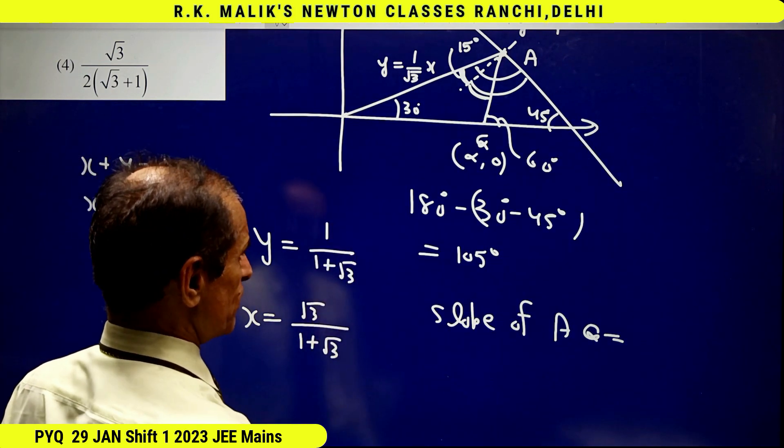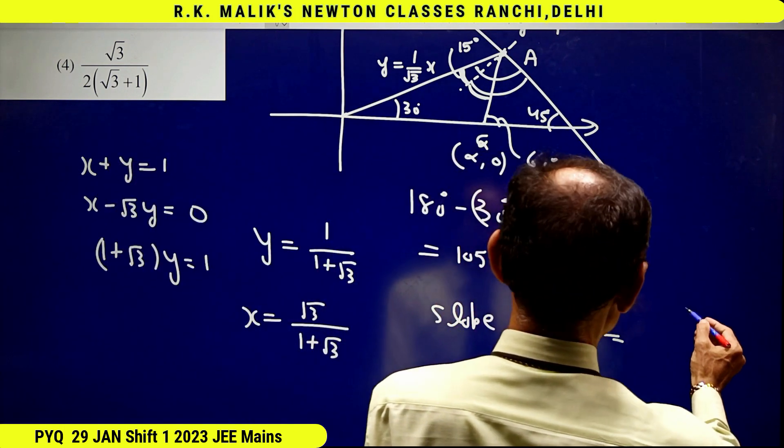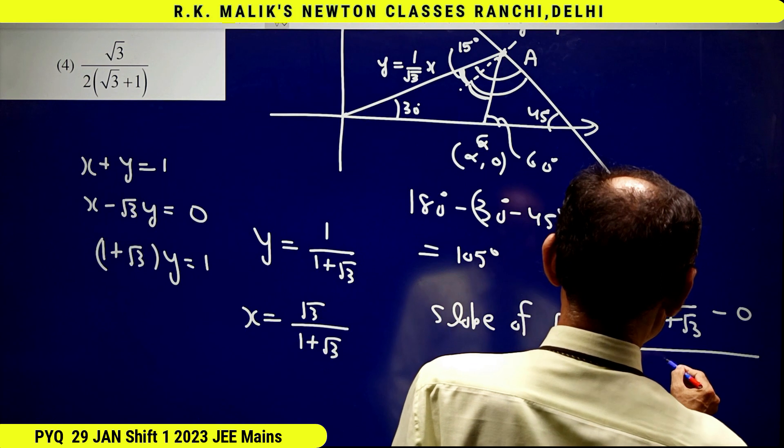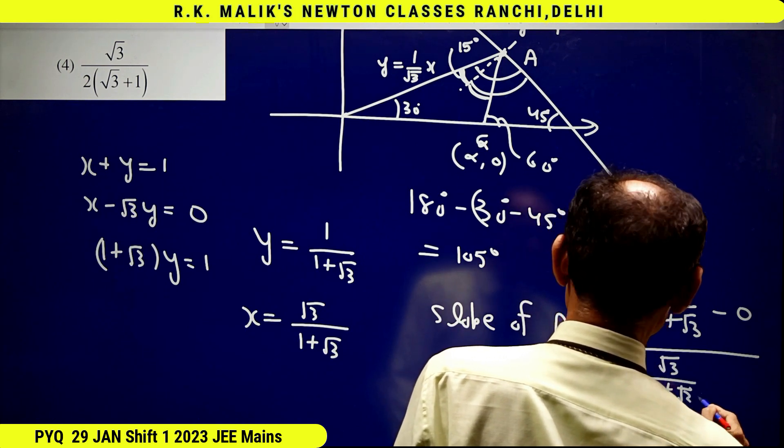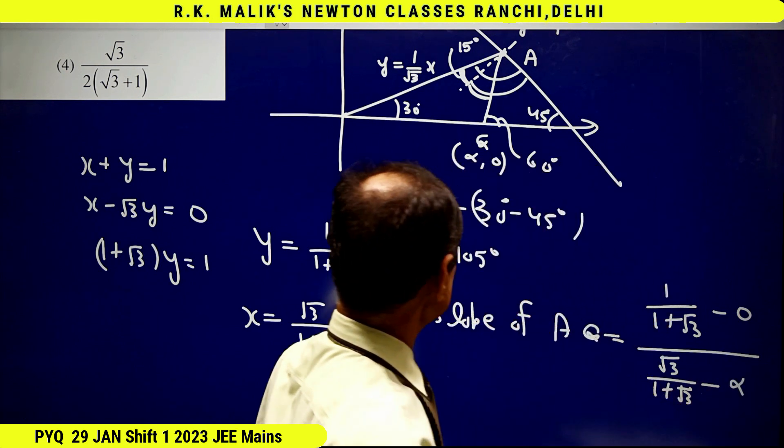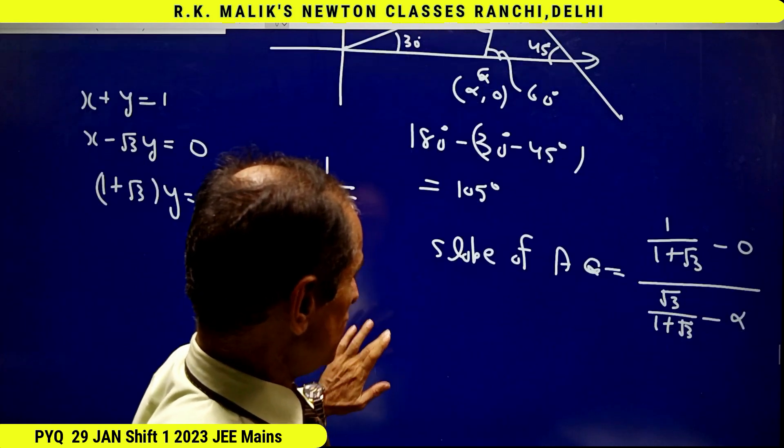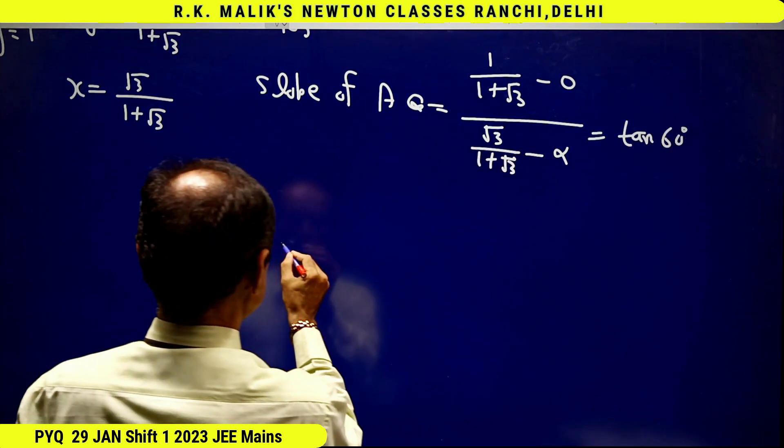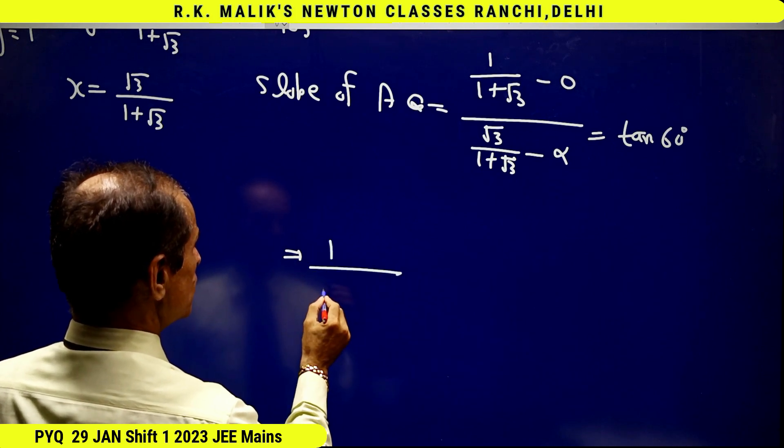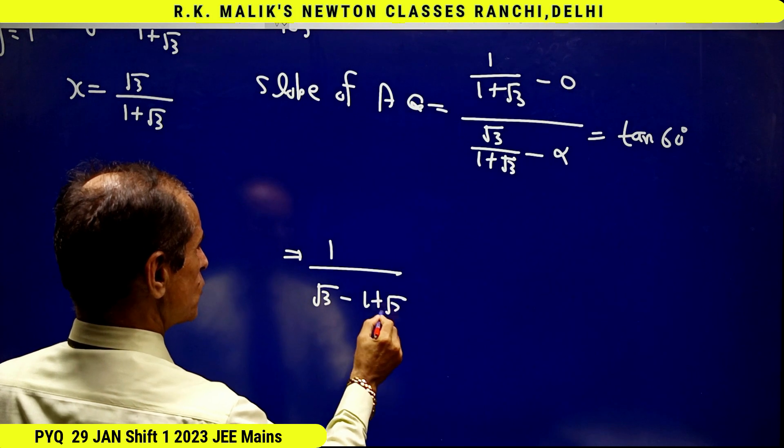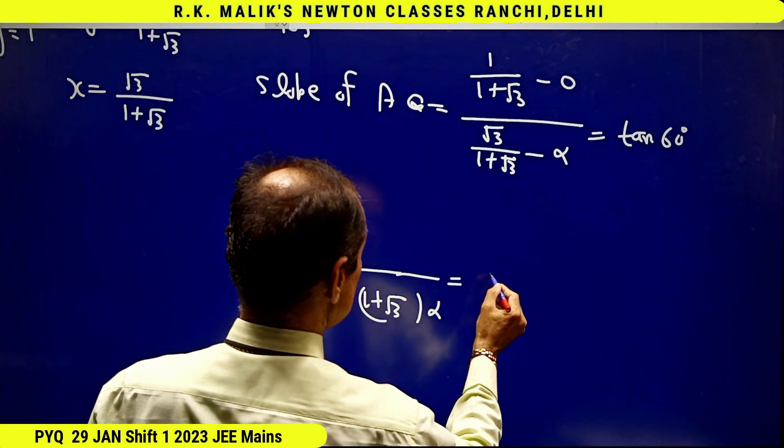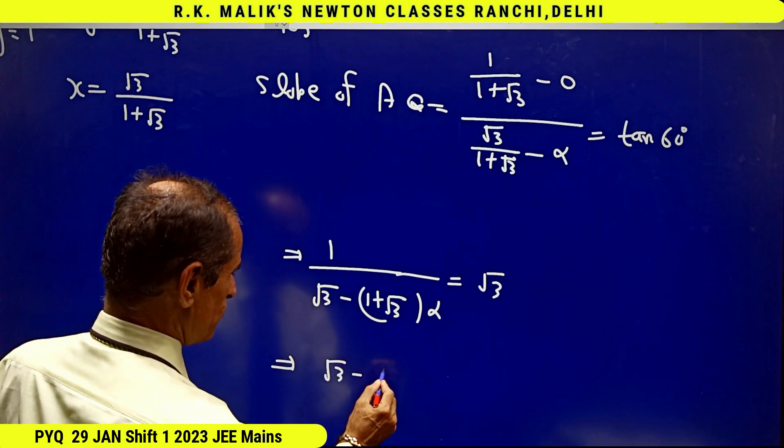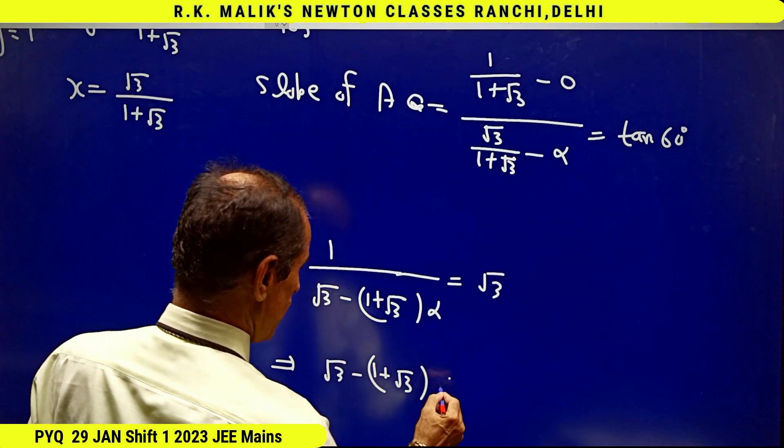Therefore, the slope of AQ will be [1/(1 + √3) - 0] / [√3/(1 + √3) - α]. And because this angle is 60 degrees, hence I will say this equals tan 60° = √3. This implies that √3 - (1 + √3)α equals 1/√3.